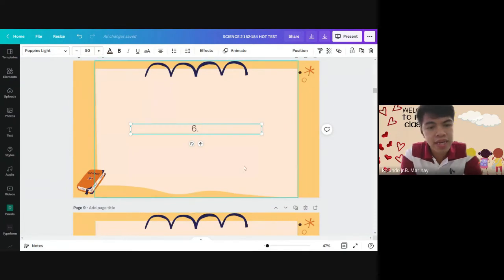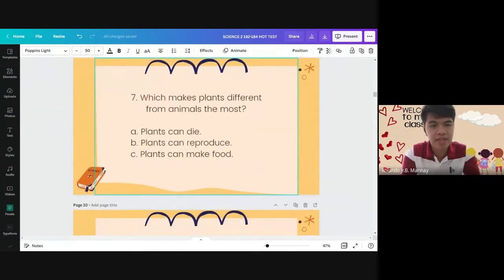Number seven. Which makes plants different from animals the most? A. Plants can die. B. Plants can reproduce. C. Plants can make food.